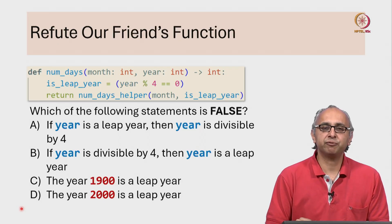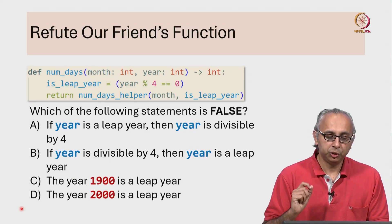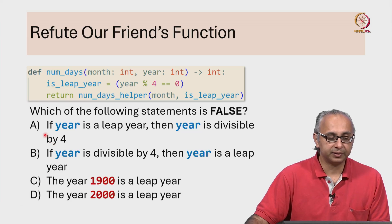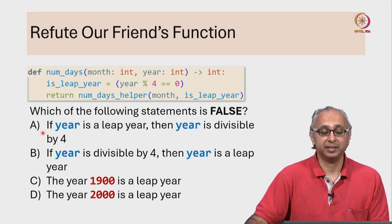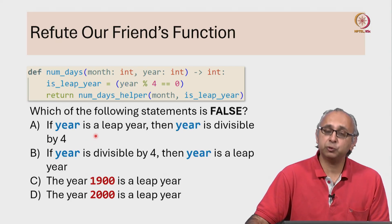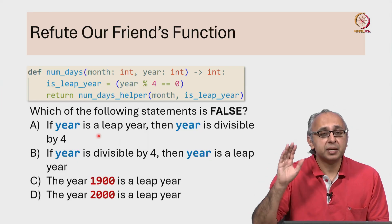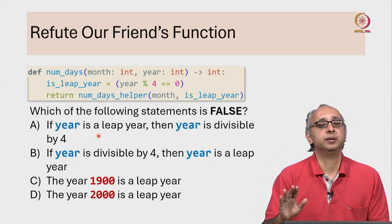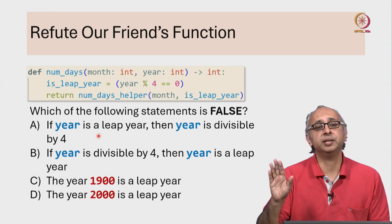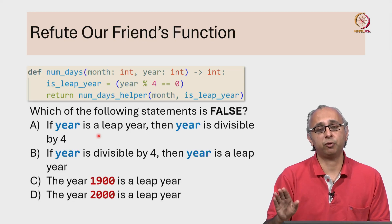So if you looked up the definition of a leap year, you would have found out that this statement A is correct. If I tell you a year is a leap year, then it must be the case that that year is divisible by 4.